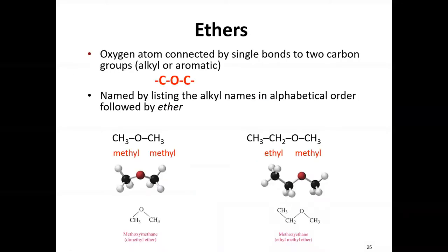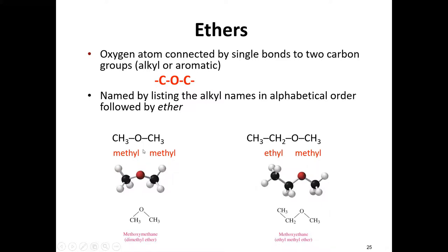Now let's get into ethers — our last group. Ethers are when we have an oxygen atom connected by single bonds to two carbon groups: an alkyl group, aromatic group, or even a cyclic group on either side. They're named by listing the alkyl names in alphabetical order followed by 'ether' (common name). With two methyl groups connected to an O, this is called dimethyl ether.